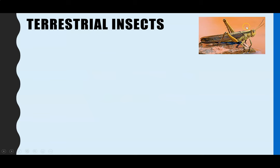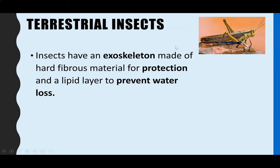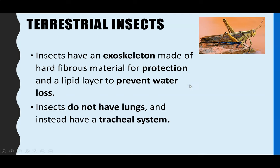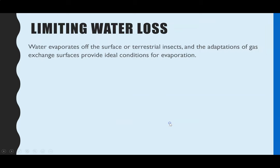First of all, just a bit of an overview on terrestrial insects. They all have an exoskeleton which is made up of chitin, which is a hard fibrous material to help protect them, but it also contains a lipid layer to prevent water loss. They don't have lungs for their ventilation and gas exchange system; instead they have a tracheal system, and that's what we'll be going through.